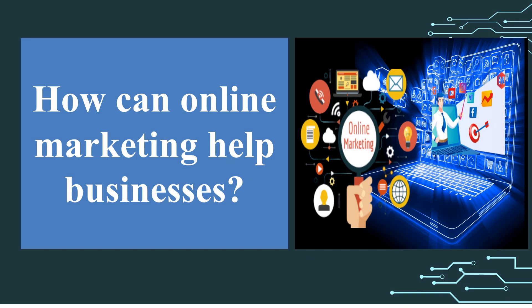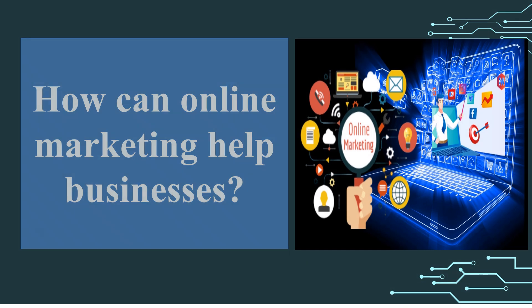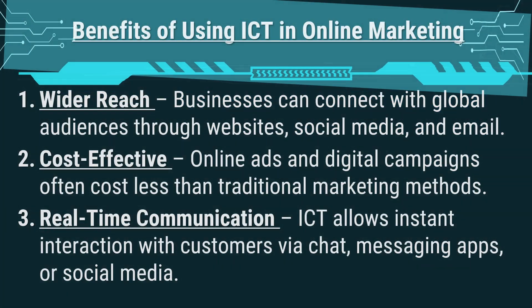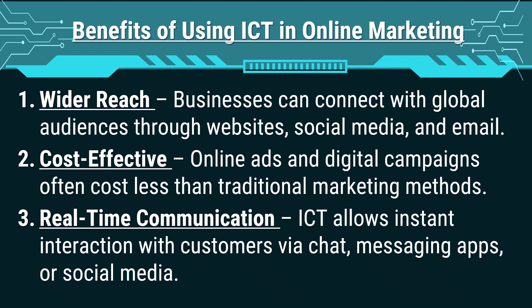How can online marketing help businesses? Online marketing can reach more people, lower cost than TV or radio, is easy to update or customize, and enables instant communication with customers. The following are the benefits of using ICT as a tool in online marketing. First, wider reach — businesses can connect with global audiences through websites, social media, and email.